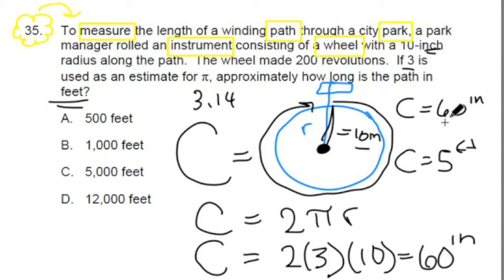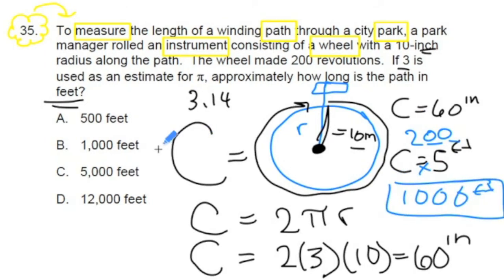All right, now we know that one rotation is 60 inches or five feet. And we're trying to find the answer in feet. So we're going to use the five feet for one rotation. And we're going 200 times. So we're going to take that five times 200, multiply them out. Let's see, five times 200. We've got five times two is 10, 10 plus two extra zeros is 1,000, 1,000 feet. That means the path through the park is 1,000 feet. The answer is B.